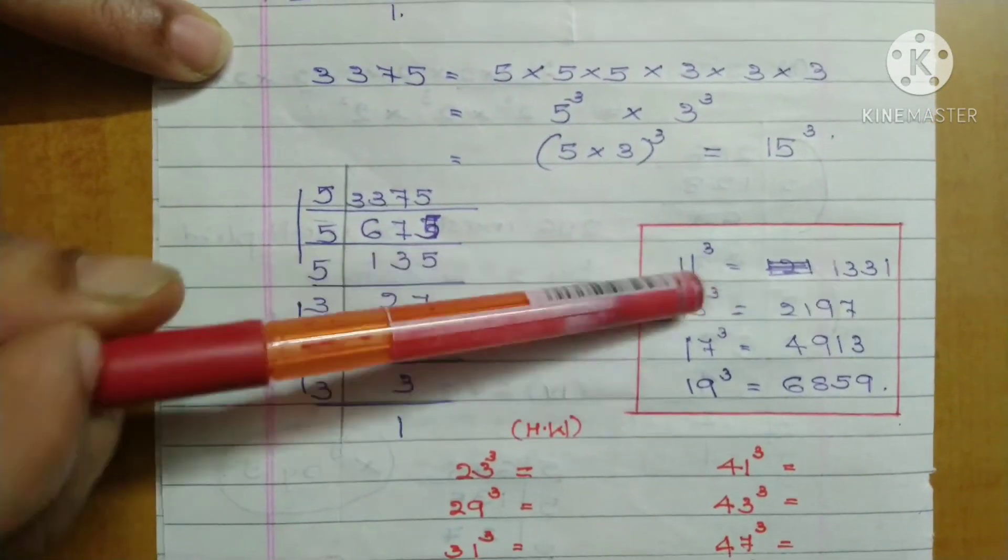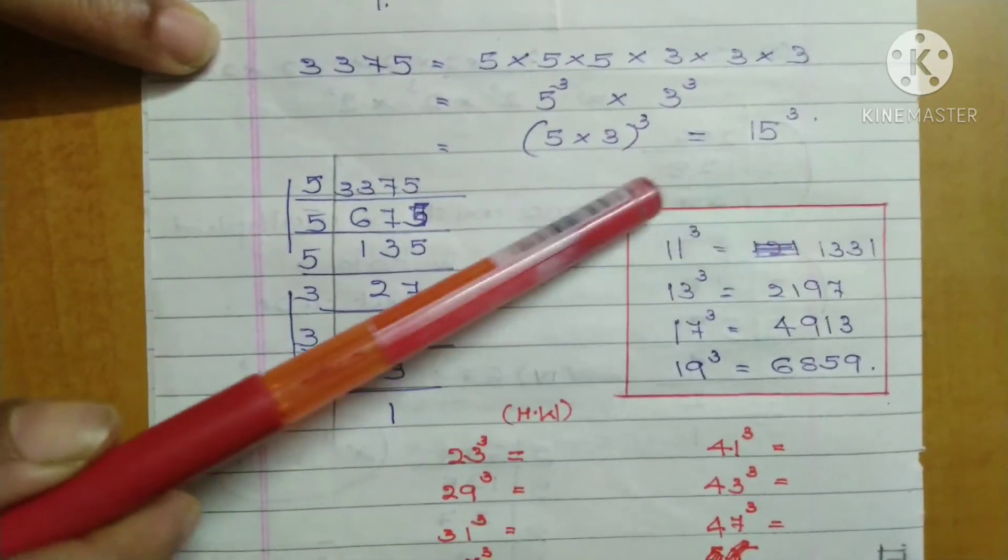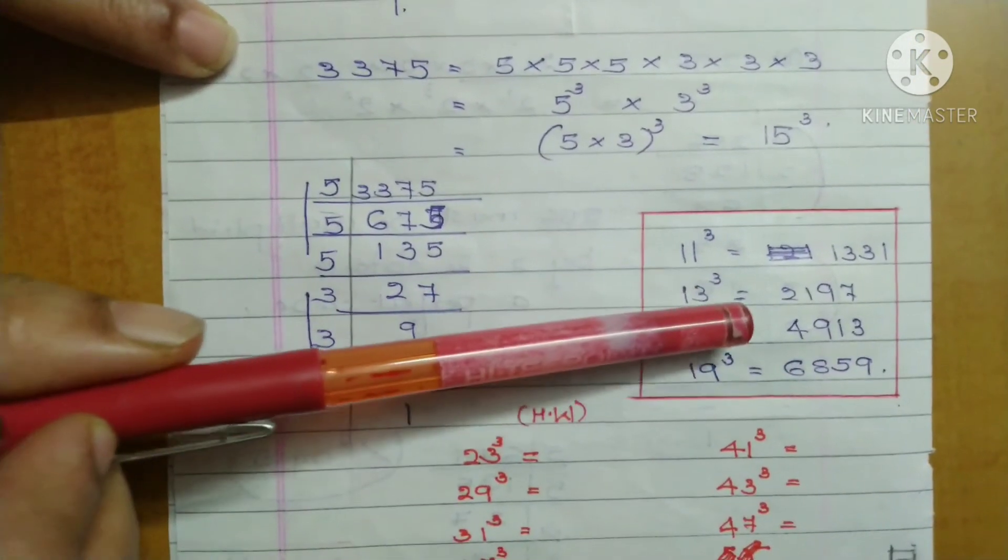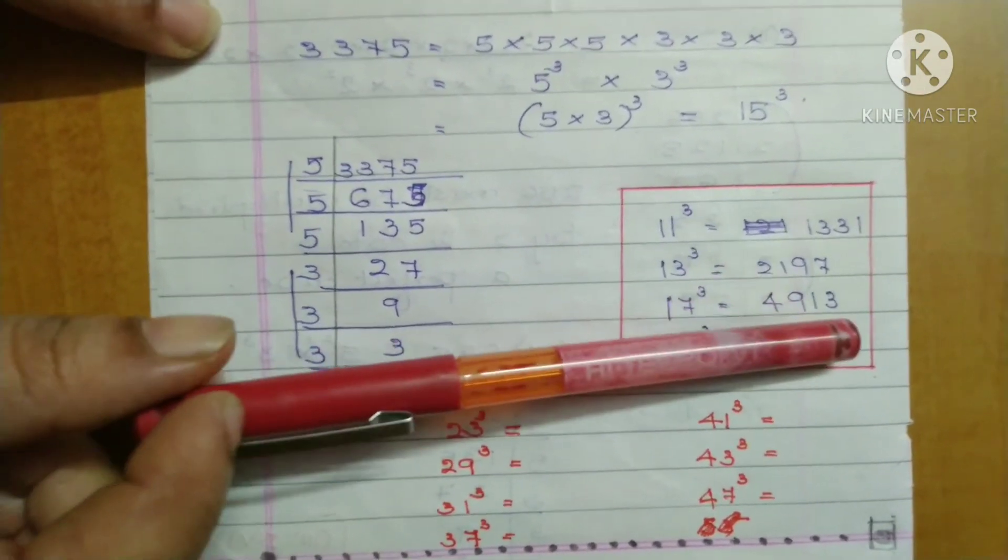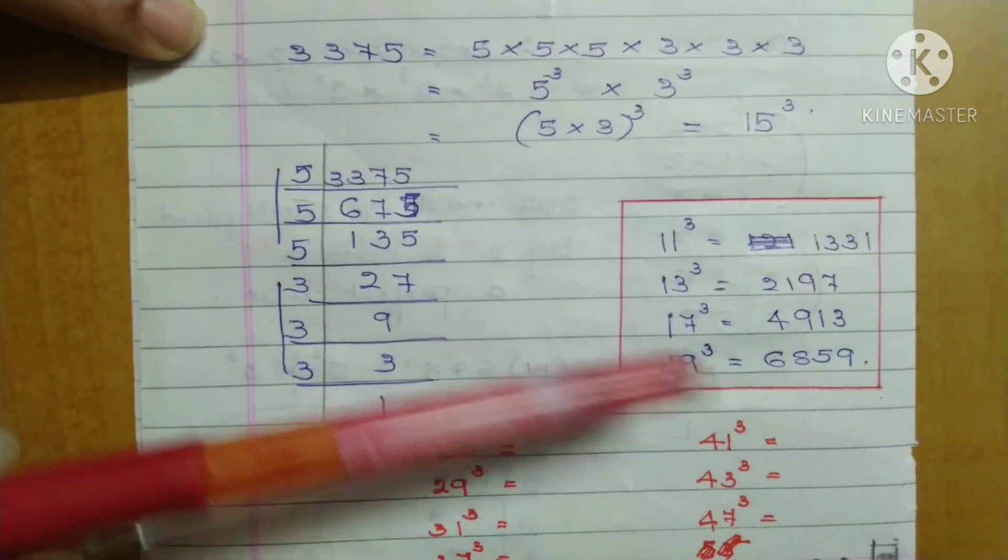is 1,331. 13³ = 2,197. 17³ = 4,913. 19³ = 6,859.